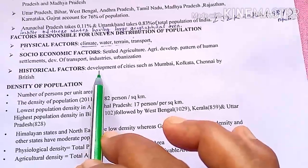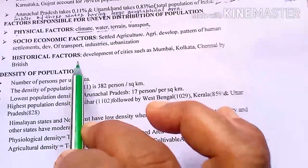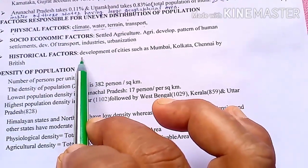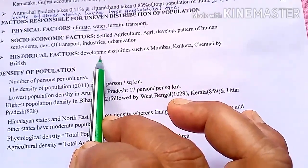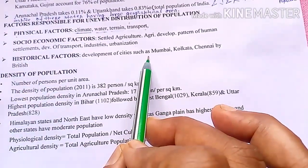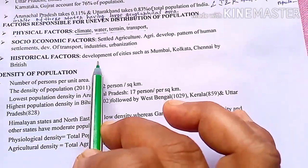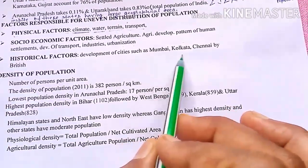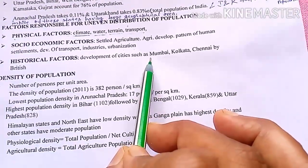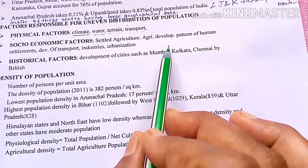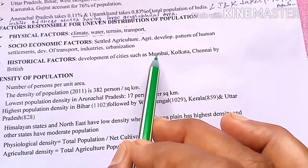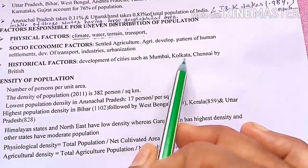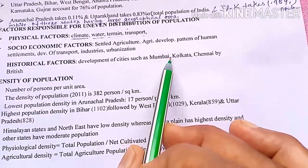Regarding historical factors, we know that when the British government came to India and started their rule, they first reached Mumbai, Kolkata, and Chennai on the coastal areas. They developed these areas first as metro cities, and people were attracted to these cities for the facilities provided. So in these areas, population became mostly concentrated.